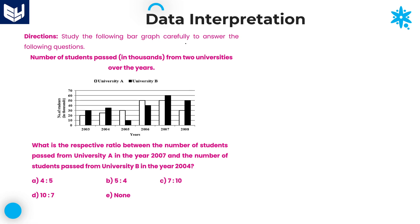Hi everyone, welcome to the session. In this session I am continuing bar graph data interpretation. First of all we need to read the information carefully and then solve the questions according to the given information. The bar graph shows the number of students who passed from two universities over the years, and each value is given in terms of thousands.